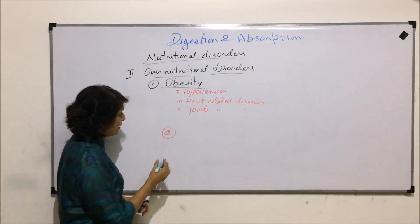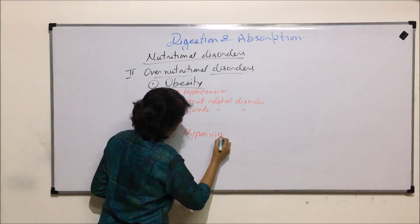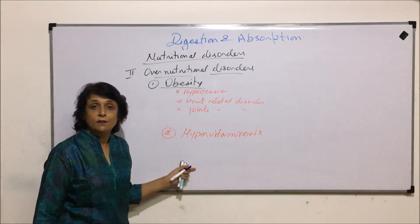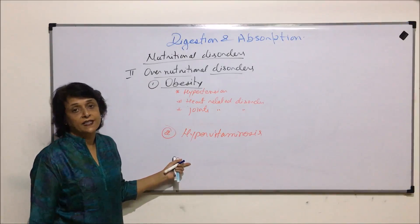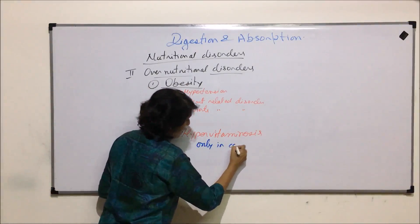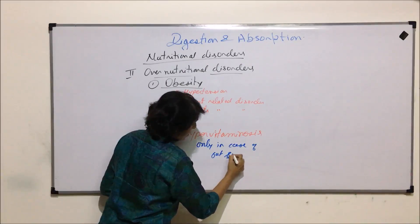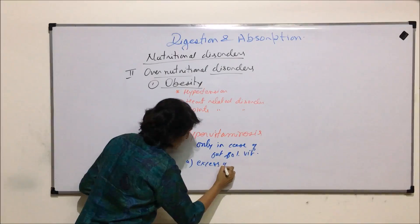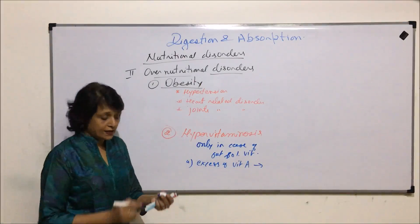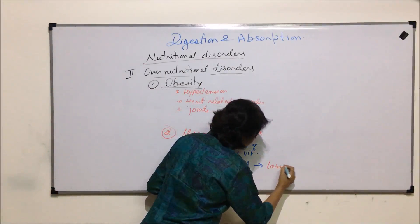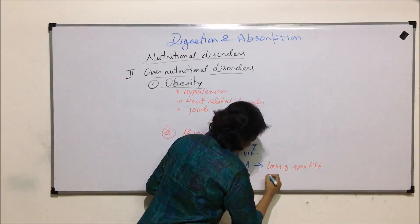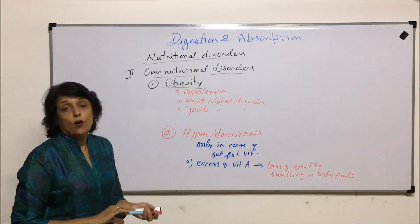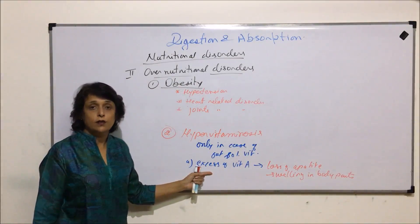The next category of over-nutritional disorder is known as hypervitaminosis. This is seen in case of fat-soluble vitamins, because water-soluble vitamins, if in excess, get excreted out. So hypervitaminosis only occurs with fat-soluble vitamins. For example, if there is excess of vitamin A, it results in symptoms like loss of appetite and swelling in body parts. So deficiency of vitamin A causes deficiency diseases, and excess of it also causes problems.